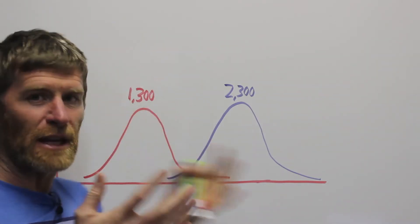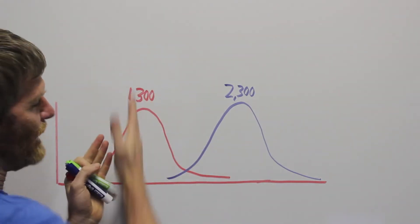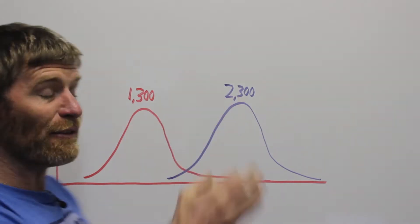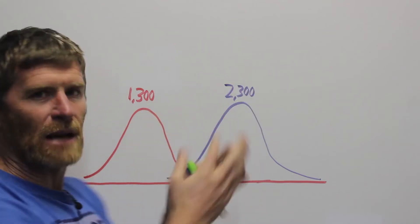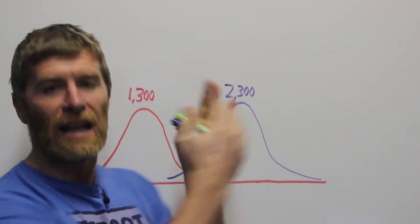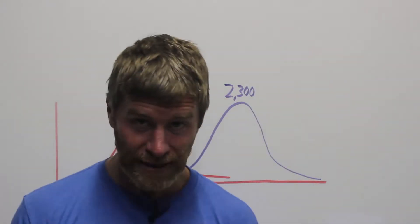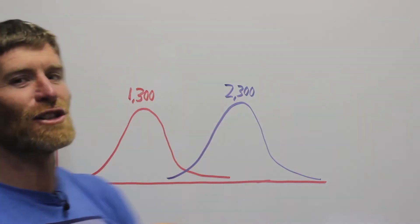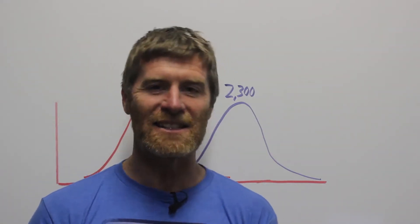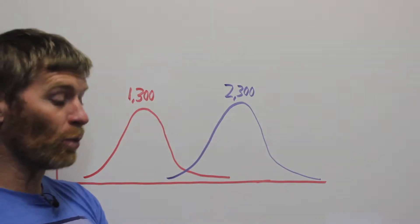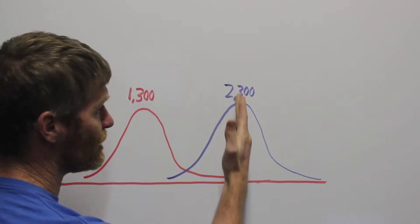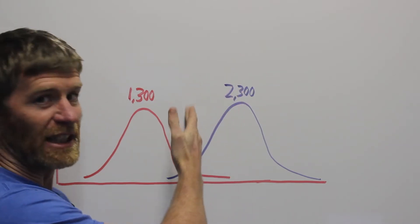So for the average female in America, the BMR is about 1,300 and the average total energy expenditure is actually about 2,300. Now, this comes down when you're dieting, if you're lighter, if you're inactive. And in the real world, the Goldilocks zone, when you're working with clients, tends to be a little bit lower than you would have hoped. But in theory, an average woman should lose weight really well in here, about 1,700, 1,800, 1,900.